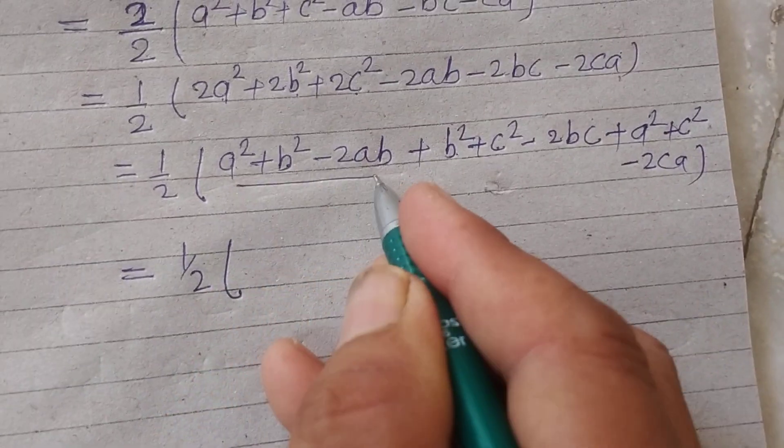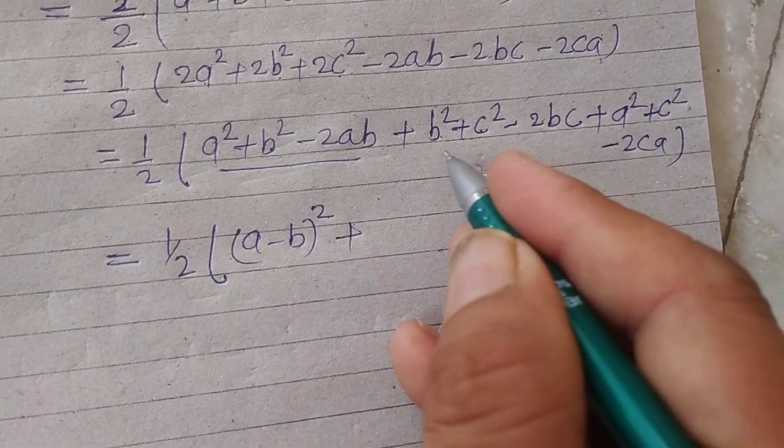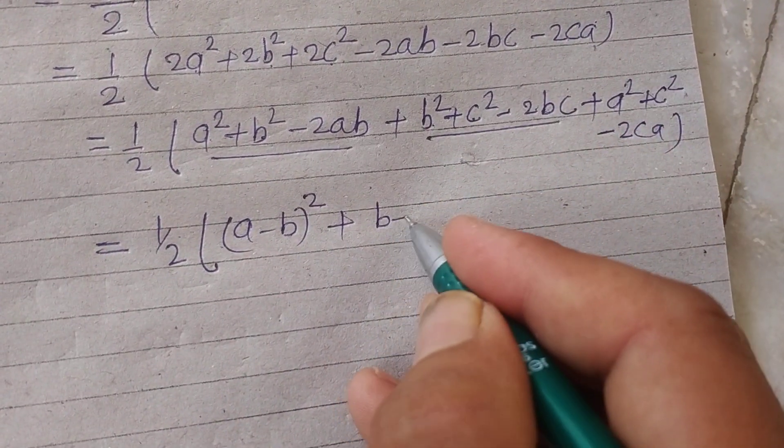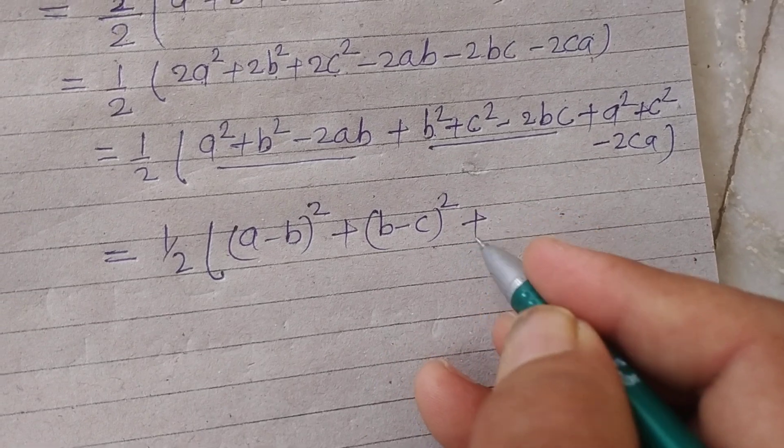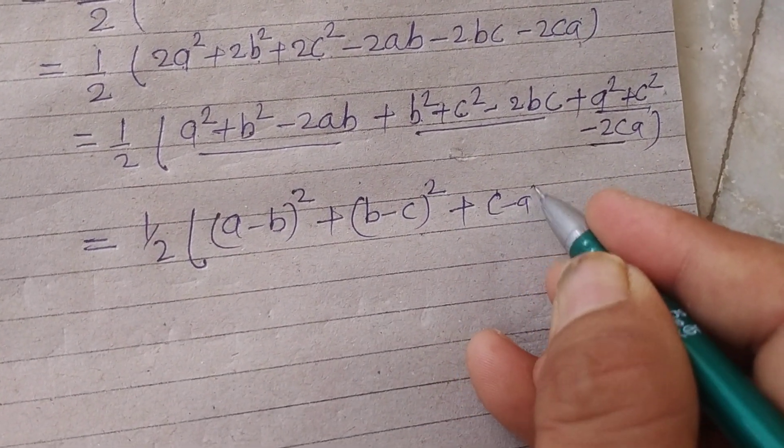So half of this will be the whole square of (a - b)² and this will be (b - c)² and this will be (c - a)².